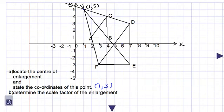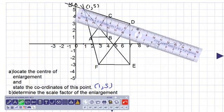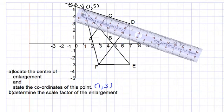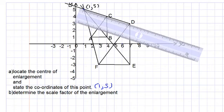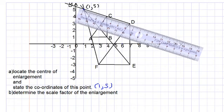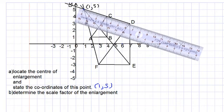Now they are asking us to determine the scale factor of the enlargement. We need to do some measurements with our ruler. So what we do is we measure the distance from the center of enlargement to point D, and we get about 6.4 thereabouts. And the distance from the center of enlargement to point C is about 3.2 centimeters.